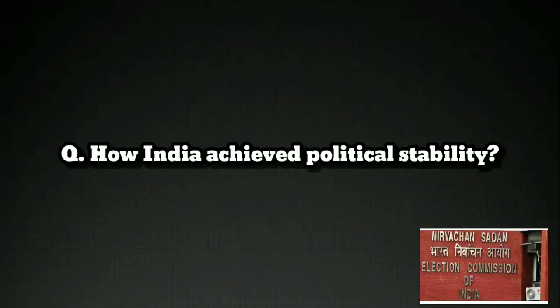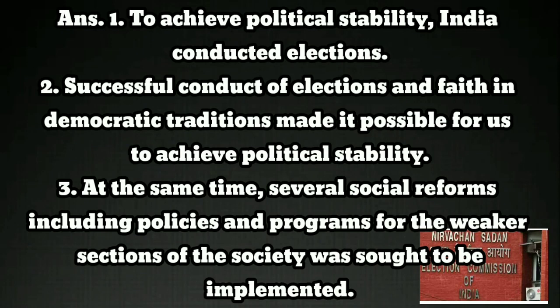Question 3: How did India achieve political stability? Answer: To achieve political stability, India conducted elections. Successful conduct of elections and faith in democratic traditions made it possible to achieve political stability. At the same time, several social reforms, including policies and programs for the weaker sections of the society, were sought to be implemented.